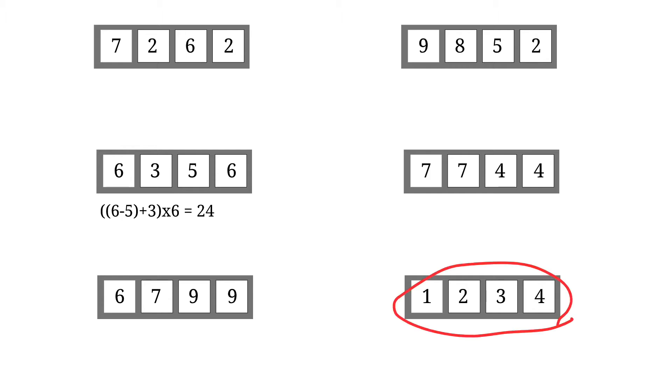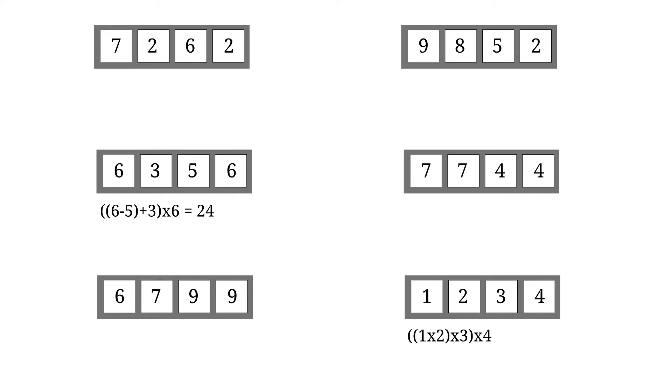How about 1, 2, 3, 4? You can just multiply all of them together. 1 times 2 is 2, 2 times 3 is 6, 6 times 4 is 24.